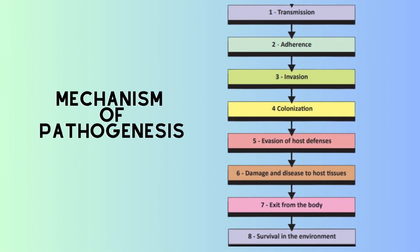Mechanism of pathogenesis. This pathogen mechanism is mostly dependent on eight factors. Number one is transmission — how the pathogen is transferred. The second is adherence — how the pathogen adheres, including which types of receptors and virulent genes are involved.